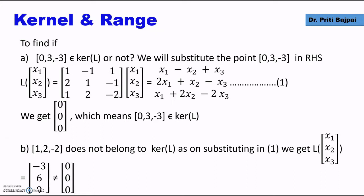Let's take another point: (1, 2, -2). When we substitute it in our equation, we see that we get x₁ as -3, x₂ as 6, x₃ as 9, which is not (0, 0, 0). This means that L(V) has not given us zero of R³, so (1, 2, -2) does not belong to the kernel of L.